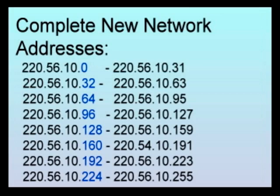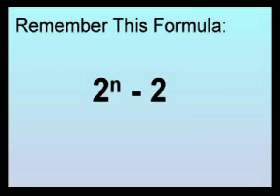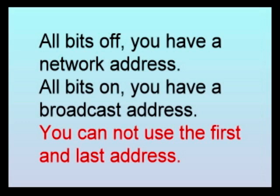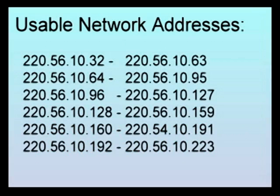So we take 220.56.10.0 — our first range ends at 31. Second range: 220.56.10.32, ending at 63. Then 64 to 95, and so on. We've got our range of network addresses, but wait — there are eight sets of numbers. Remember our formula: 2 to the n minus 2. The reason we subtract 2 is that in TCP/IP version 4, all bits off is a network address, and all bits on is broadcast. We can't use the first or last address, so our usable range is six sets of addresses.